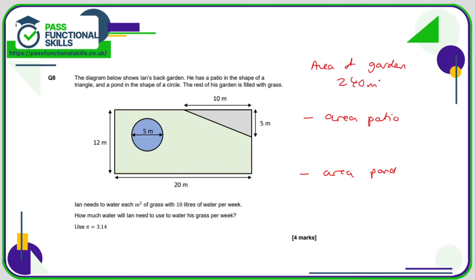The area of the garden is 12 times 20, and that's 240. The patio—that is a triangle, so half base times height. That's 5 times by 10 divided by 2, which is 25 meters squared. And the area of the pond—well, it's a circle, so that's pi r squared. The diameter is 5, so the radius is 2.5. So that's 3.14 multiplied by 2.5 multiplied by 2.5, and that comes to a total of 19.625 square meters. So the area of the grass is going to be 240 minus the 25 minus the 19.625.